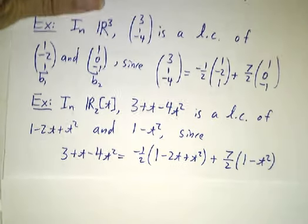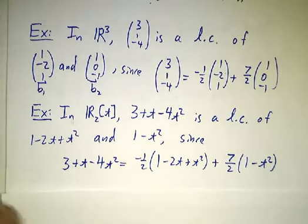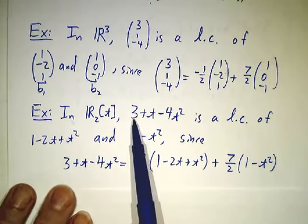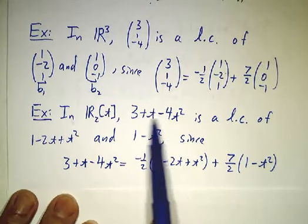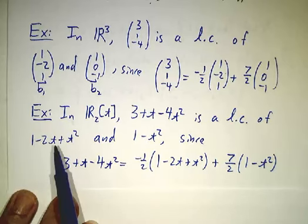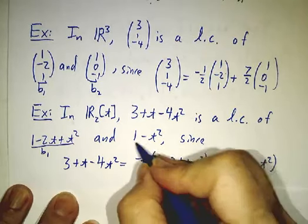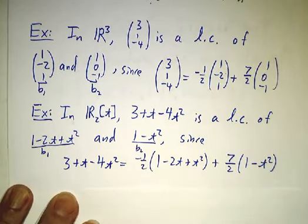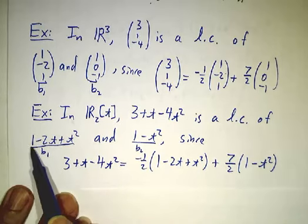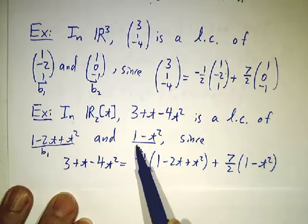We could work in a different space. We could work in the space of quadratic polynomials and look at the polynomial 3 + t - 4t². That's a vector, it's an element of this space. We could call this b1 and this b2. So b1 is the polynomial 1 - 2t + t², and b2 is the polynomial 1 - t².